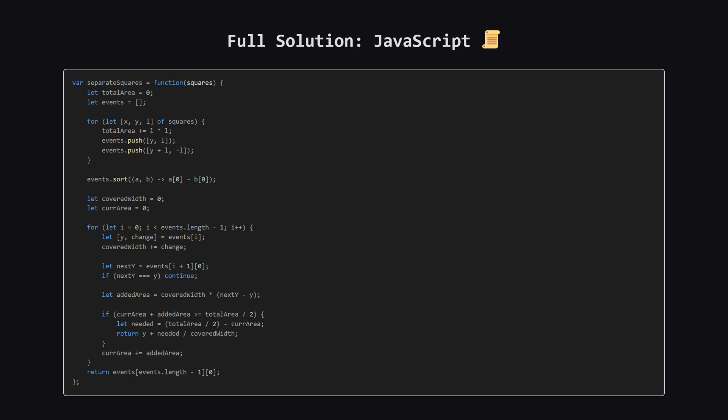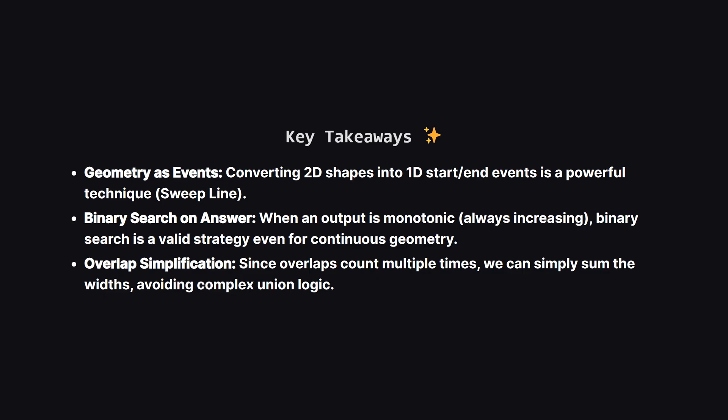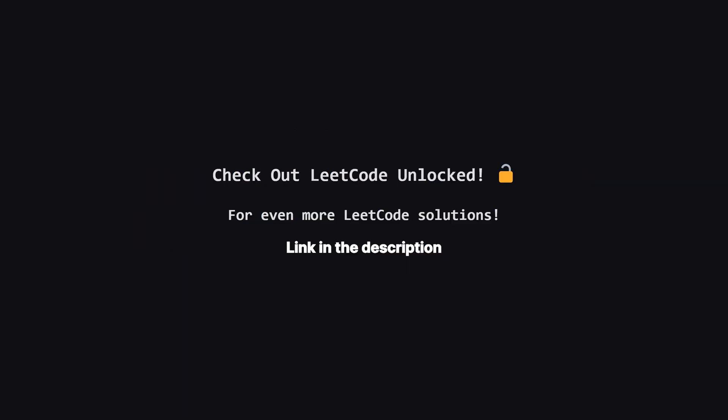Hopefully seeing it in a few different languages helps solidify the concepts. So let's wrap it up. We looked at two ways to solve this: first, binary search, where we guessed the answer and refined it; second, the sweep line algorithm, where we processed width changes as events. The key takeaway is that even complex 2D geometry problems can often be flattened into simpler 1D problems by sorting coordinates. If you're looking for even more LeetCode problems, I've started a second channel called LeetCode Unlocked where I'll be posting solutions to a ton of other problems. The link is in the description.